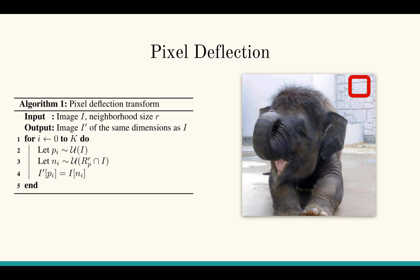We combine these two insights to design a transformation we call pixel deflection. Like the previous experiment we change image pixels, however instead of replacing them with random values we replace each pixel with another pixel within the local neighborhood. We also apply more pixel deflection on the background than on the foreground.